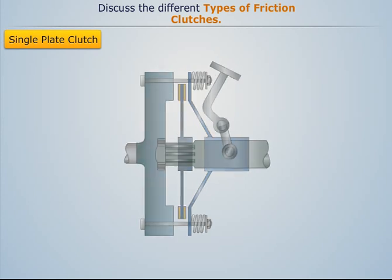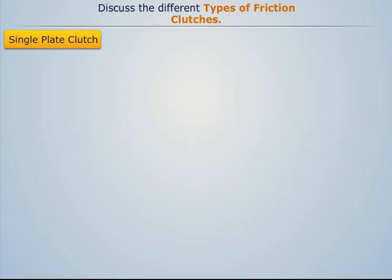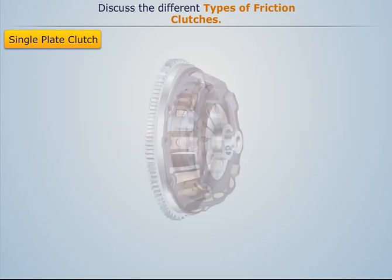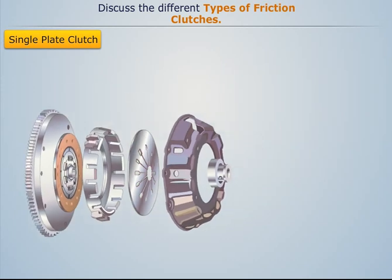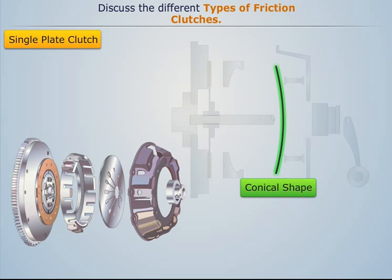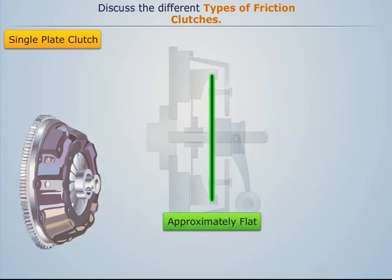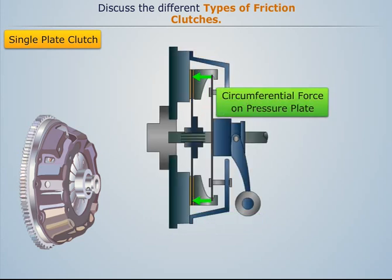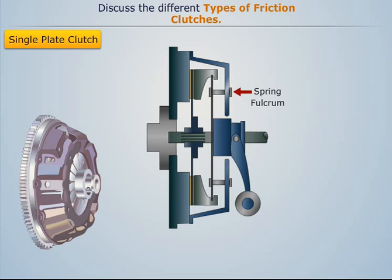Nowadays, a modified single plate clutch known as the diaphragm spring type single plate clutch is used. It consists of a diaphragm spring attached to the pressure plate instead of regular coil springs. In the free condition, the diaphragm spring is conical in shape, but when assembled it is constrained to an approximately flat condition, because of which it exerts a force circumferentially on the pressure plate, keeping the clutch in the engaged position.